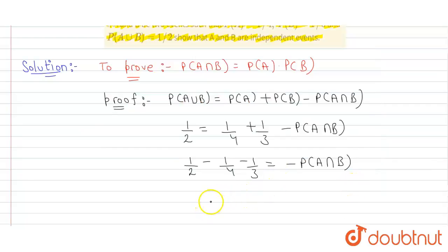LCM of 2, 4 and 3 is 12. So 6 minus 3 minus 4 over 12 equals minus P(A∩B).